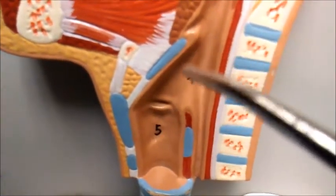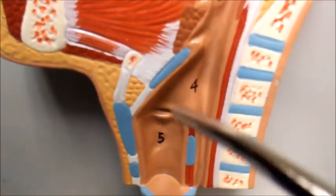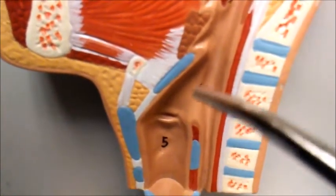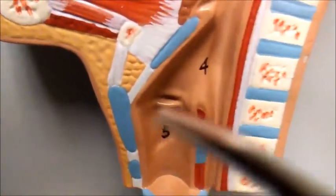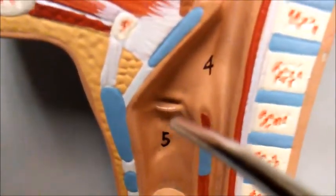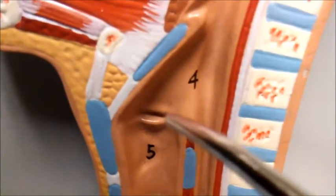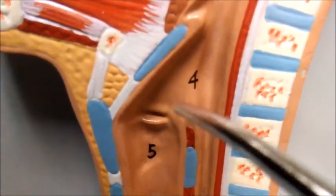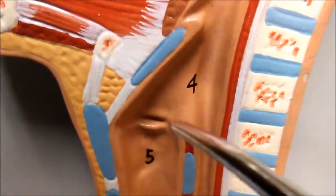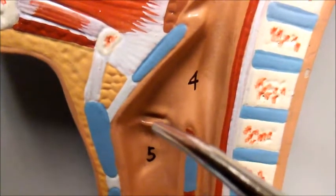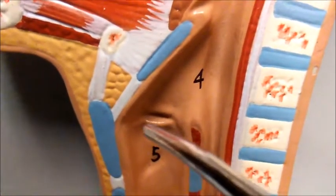The epiglottis moves during eating to close the opening to the larynx. The opening to the larynx is labeled number four and that is the glottis. The other parts of the larynx are what used to be known as the true and false vocal cords. The top portion, which used to be called the false cords, is now called the vestibular folds. The lower ones, which are the ones that make the sound, are known as the vocal folds.